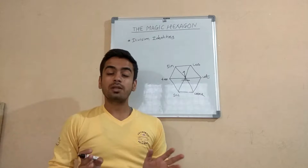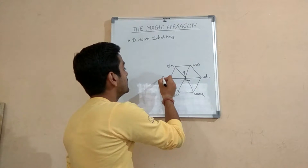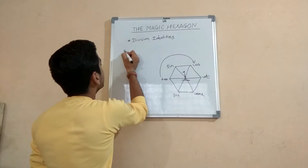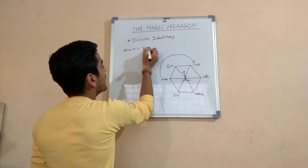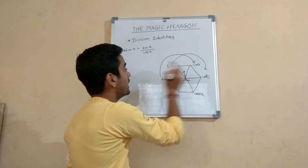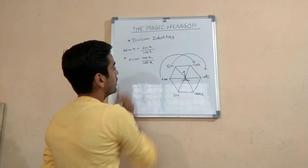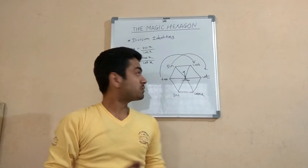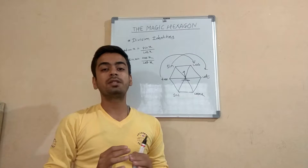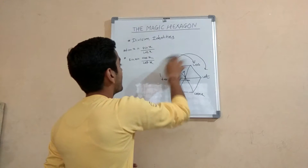For division identities you can work with two subtypes: clockwise or counterclockwise. For the clockwise type, if you go clockwise from tan to cos, you will find that tan x is equal to sin x divided by cos x. If you go further clockwise, you will find sin x is equal to cos x divided by cosec x. This applies for the whole magic hexagon and makes writing division identities very simple.